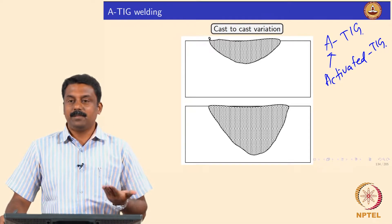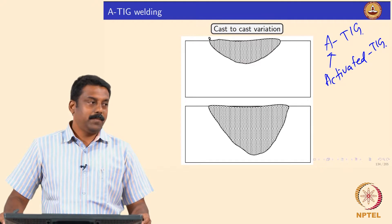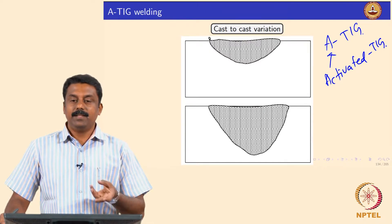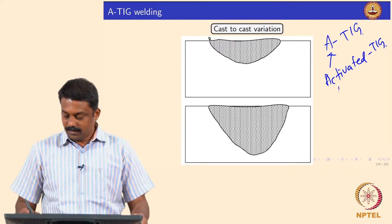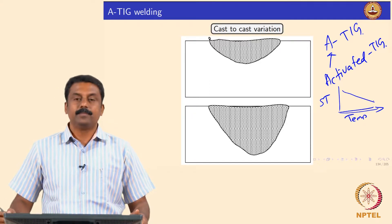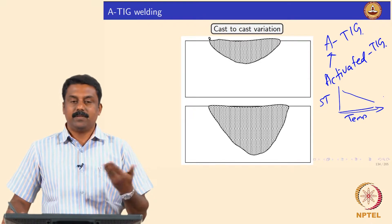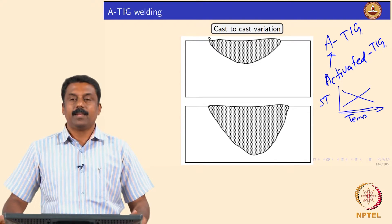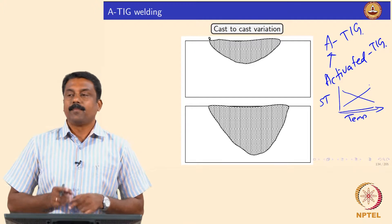A classical example we always face is because of sulphur: when you have sulphur, the surface tension of the liquid pool changes significantly. In one case, some element concentration is increased such that surface tension of the liquid decreases as a function of temperature. In another case, you change the concentration of some element such that surface tension increases as a function of temperature. These two behaviors play a significant role in determining weld pool geometry.